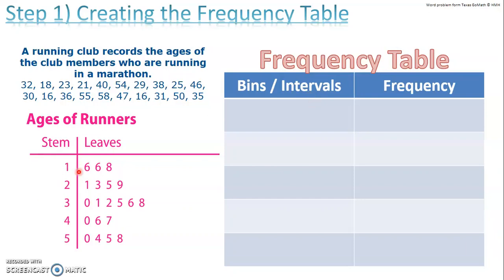So for example, for our stem and leaf plot, all of these numbers have a stem of 1. So it has to be either 10, 11, 12, 13, 14, 15, 16, 17, 18, 19. And that's it. We don't say 10 through 20, right? It's only through 10 and 19. So let's use that as my first interval.